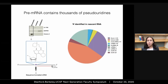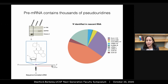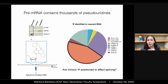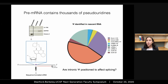Using this approach, I identified hundreds of novel pseudouridines in nuclear non-coding RNAs and thousands of pseudouridines in pre-messenger RNA, the majority of which were in introns. I was quite excited about these intronic pseudouridines because of their potential to influence splicing.